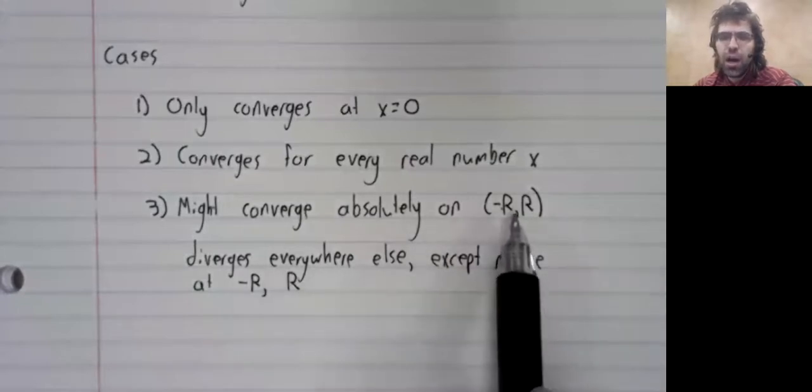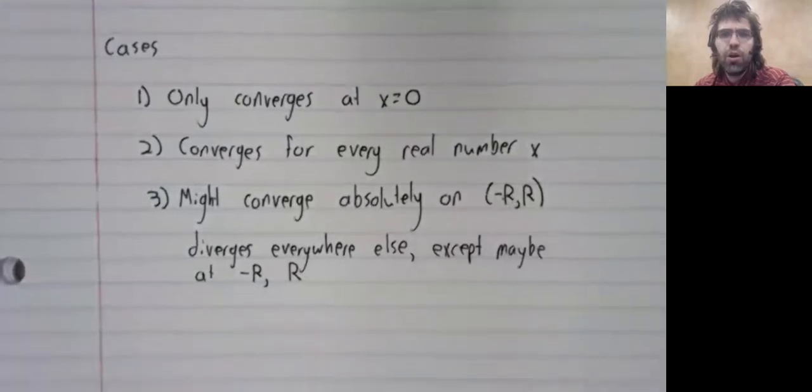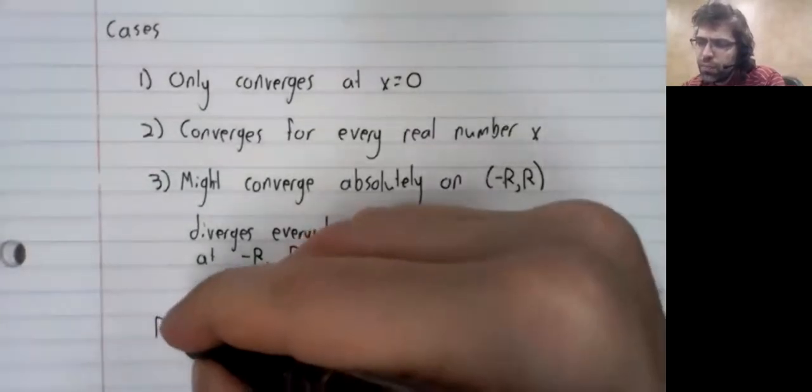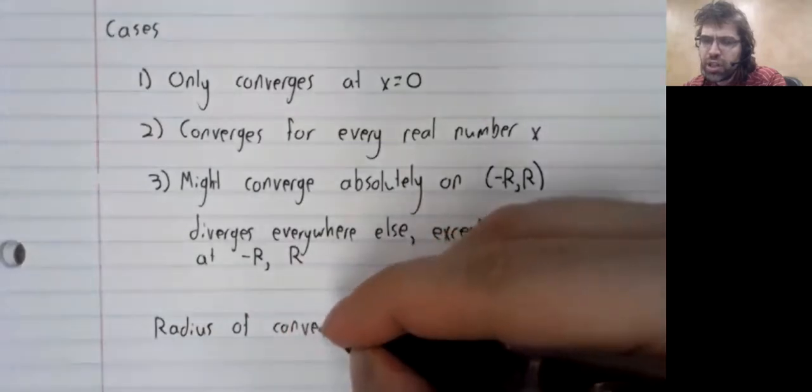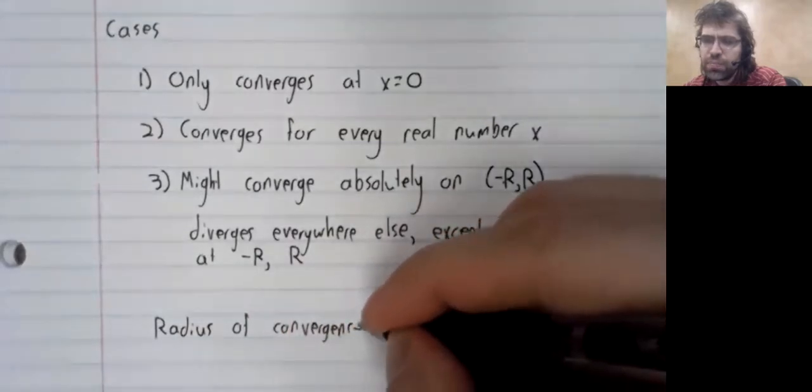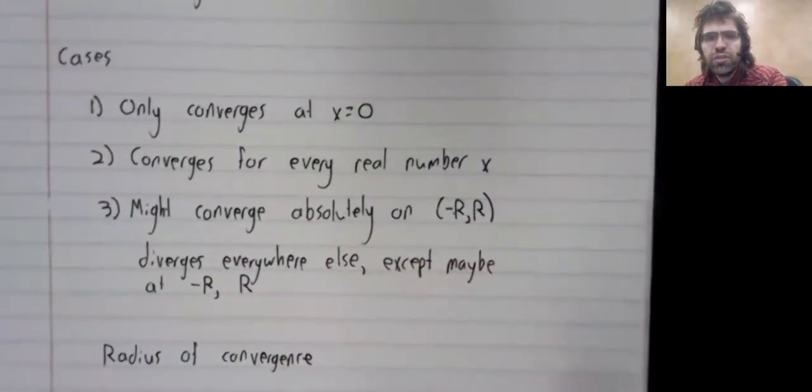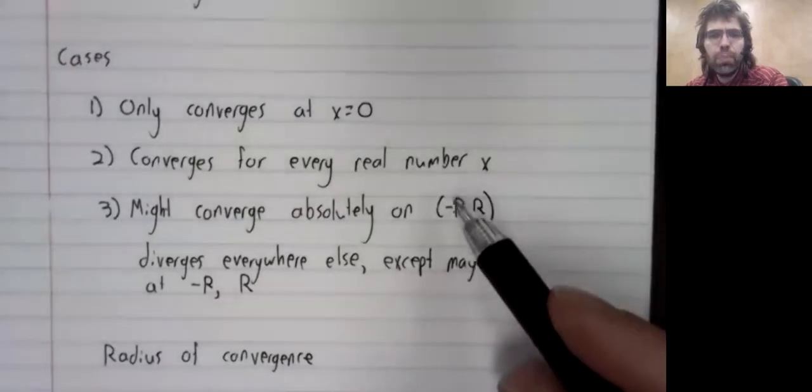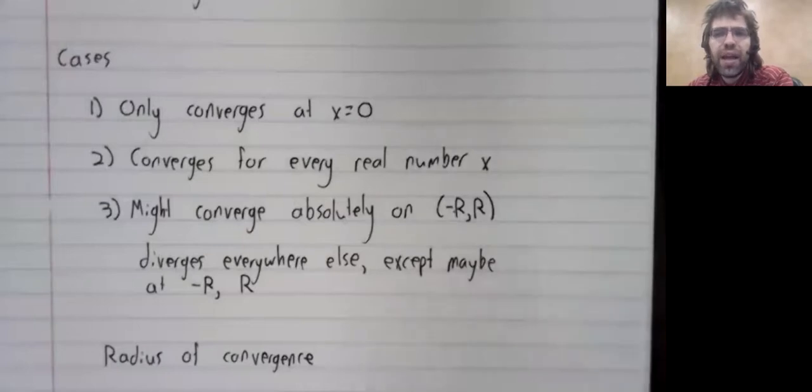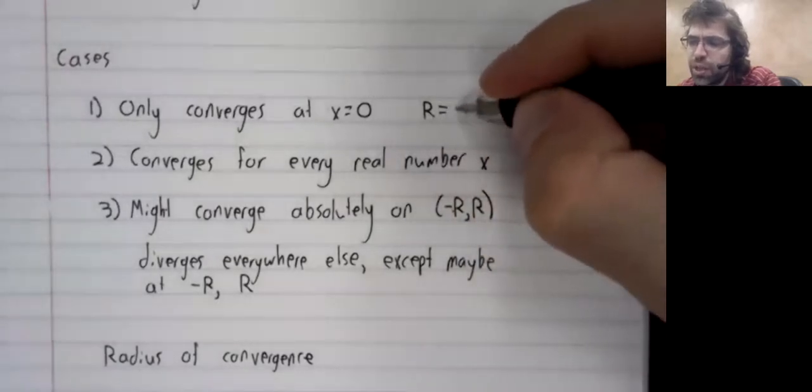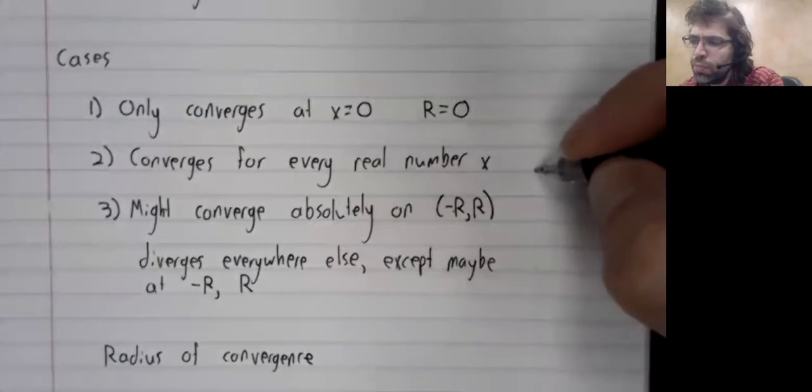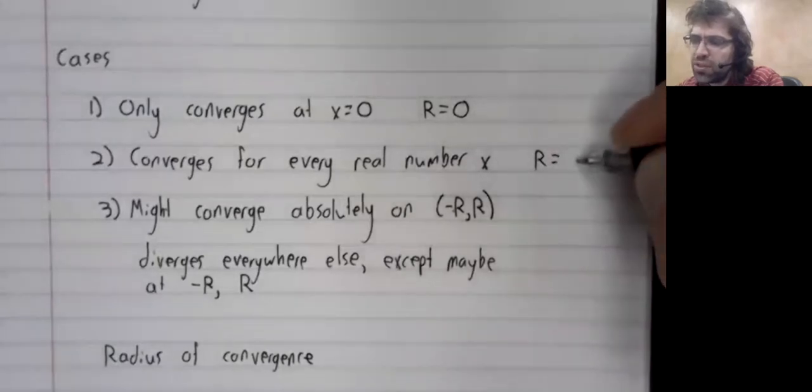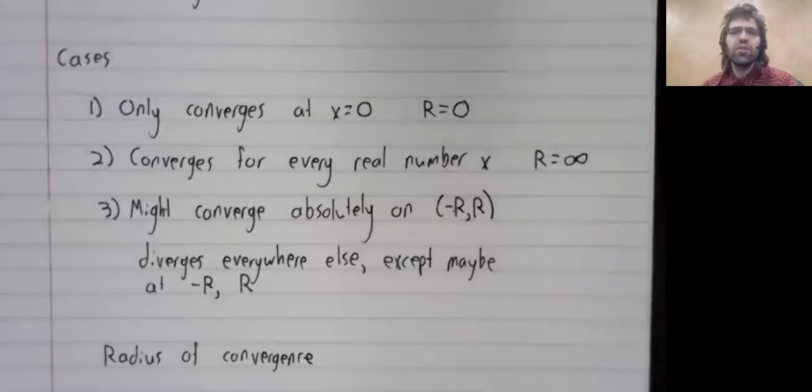This r gets a name, we call it the radius of convergence. And the radius of convergence only explicitly shows up in this case, but every power series has a radius of convergence. It's just that the radius of convergence might be zero or the radius of convergence might be infinite.